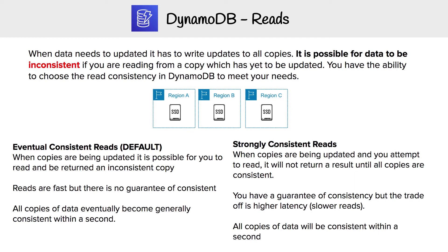The other option is strongly consistent reads. When all copies are being updated and you attempt to read, it will not return a result until all copies are consistent. You have a guarantee of consistency, but the trade off is higher latency — slower reads. However, reads will be at most a second slow because all copies of data will be consistent within a second.